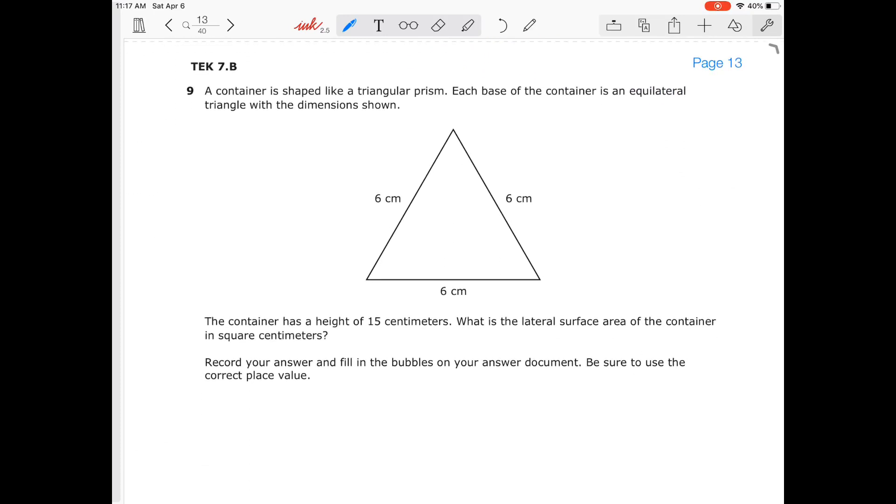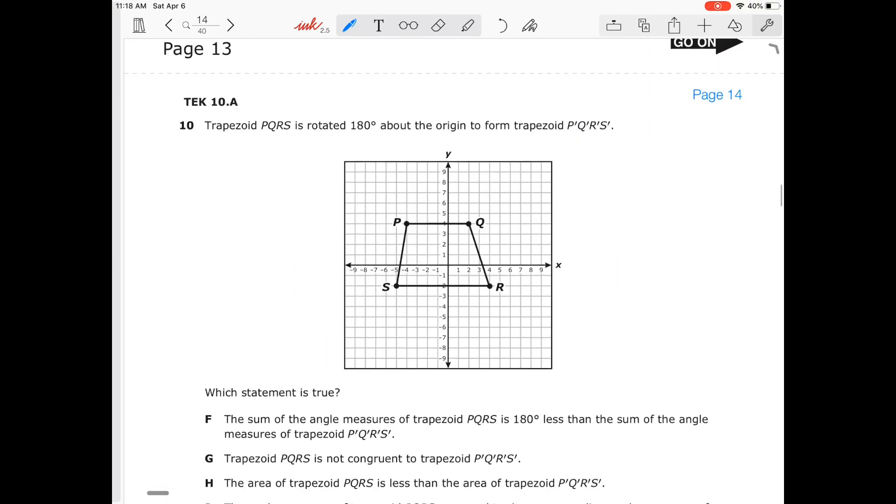Number nine. Number nine says each - so we have a triangular prism. And each base of the container is an equilateral triangle with the dimensions shown. The container has a height of 15 centimeters. What is the lateral surface area of the container in square centimeters? So that's lateral area is going to be equal to pH. So that P representing the perimeter. So 6 times 3 gives us 18 times the height, which is 15, which will give us a total of 270 centimeters squared. That easy.